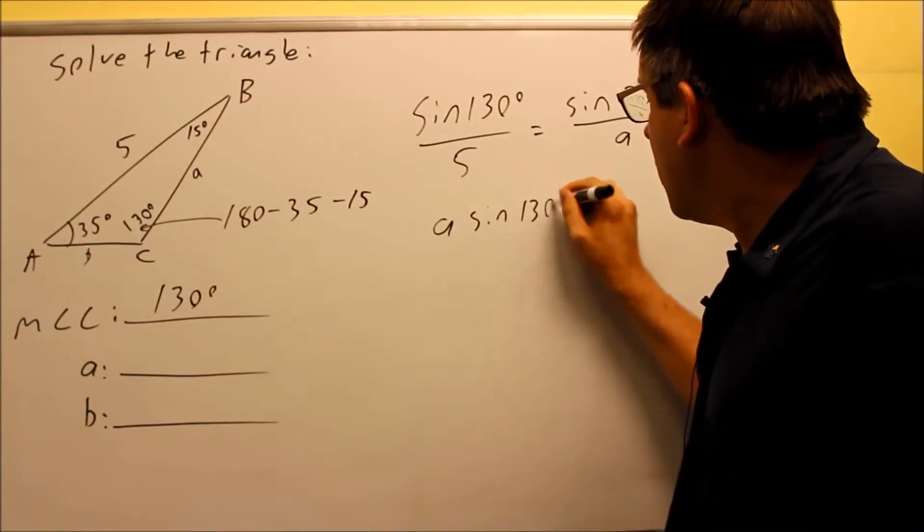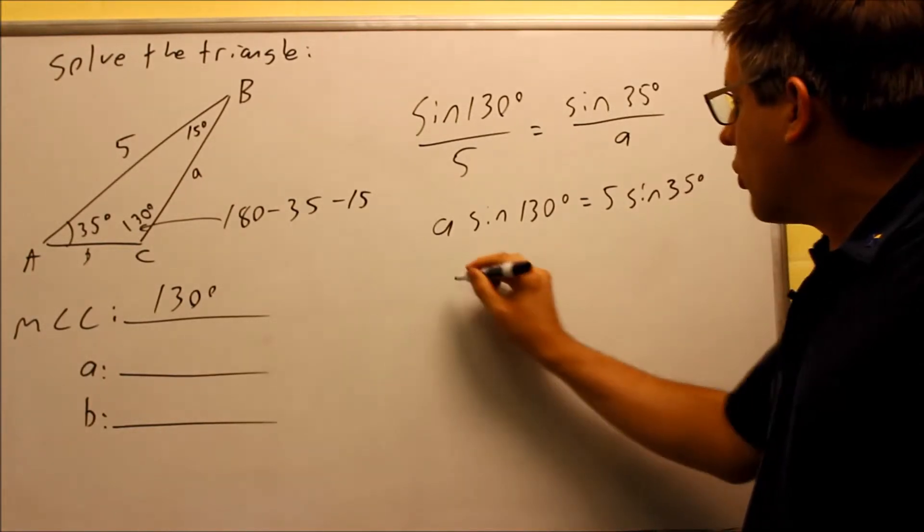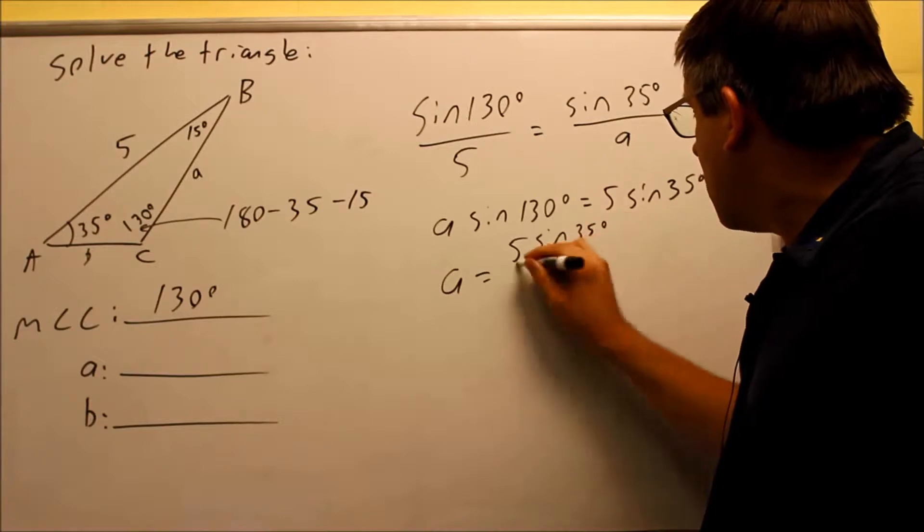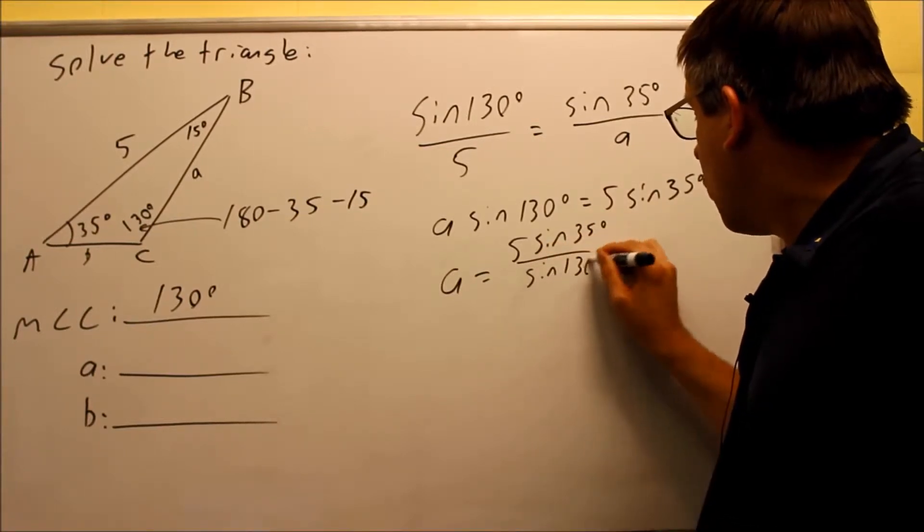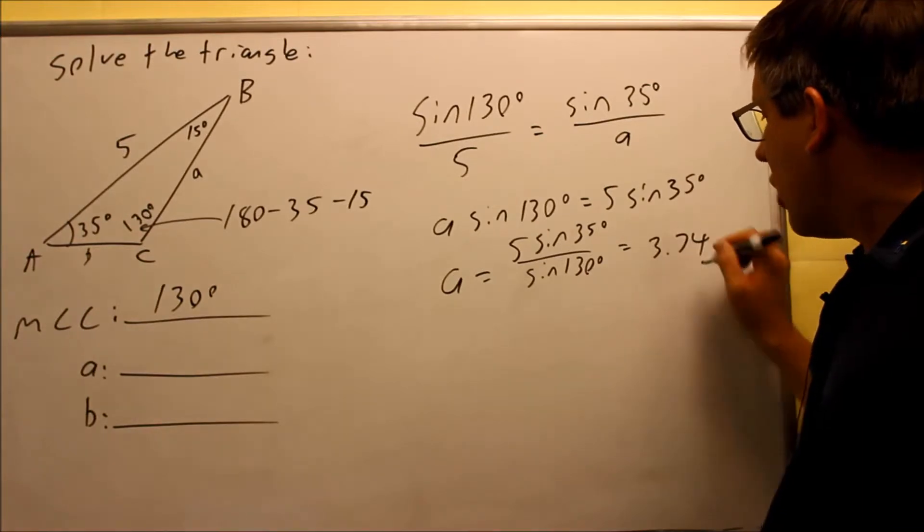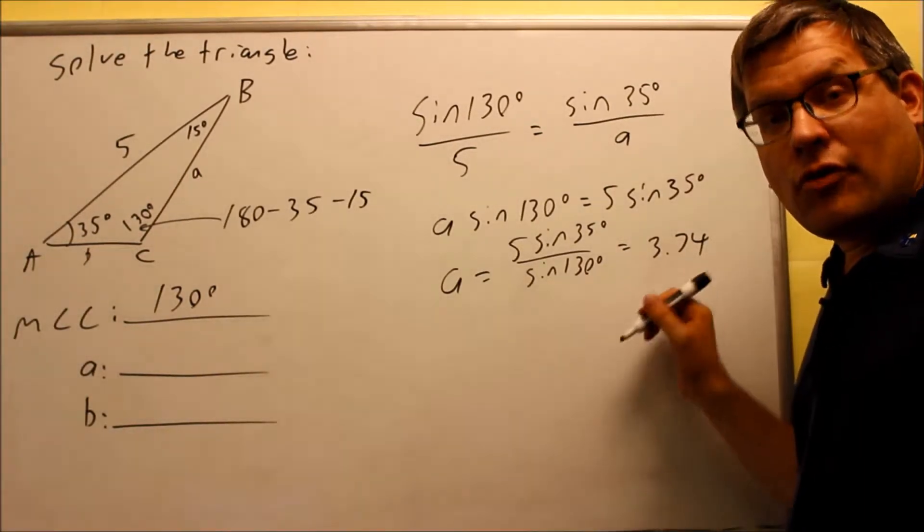You're going to get A sine 130 equals 5 sine 35. We're going to solve for A and you get 5 sine 35 degrees divided by sine 130. If you put that into the calculator, you should get 3.74, and that's going to be our value for A.